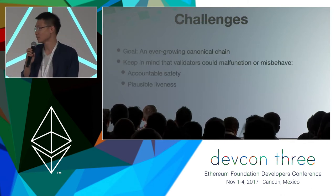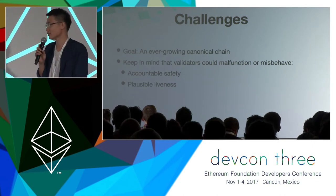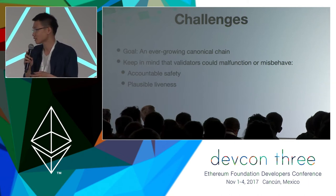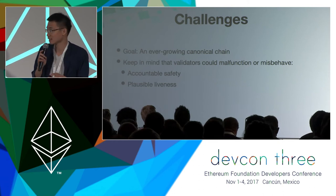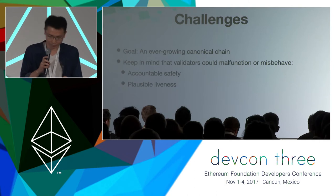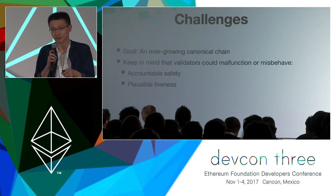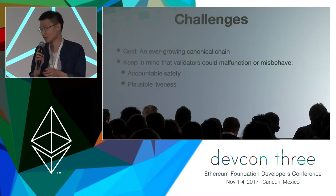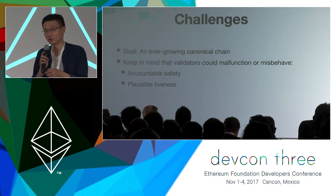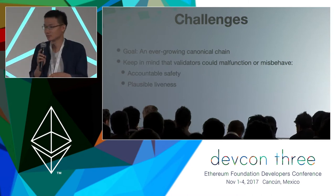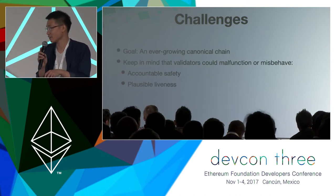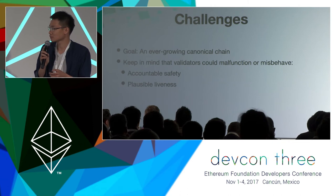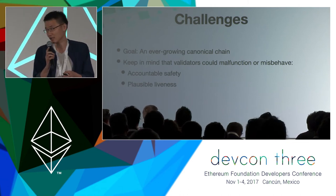So what is the challenge of CASPER? Our goal is to have an ever-growing canonical chain, just like in proof of work, where blocks come one by one and everybody sees the same chain, giving us data consistency. However, in proof of work, if there is only one miner with very low computation power, he can still solve the problem — it just takes a long time. But in proof of stake, if validators do some misbehavior or malfunction, the system could get stuck. So the challenge problems we need to solve are accountable safety and plausible liveness.